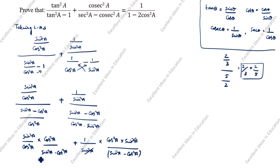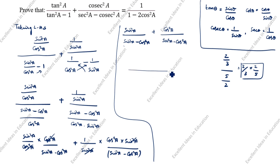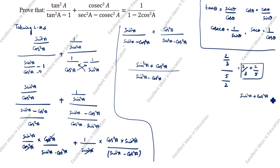Sin²a cancels and cos²a cancels. So what remains is sin²a divided by (sin²a minus cos²a), plus cos²a divided by (sin²a minus cos²a). You see the denominator here is sin²a minus cos²a, and here also sin²a minus cos²a — both denominators are the same. So we take the common denominator (sin²a minus cos²a), and the numerator becomes sin²a plus cos²a, which equals 1.